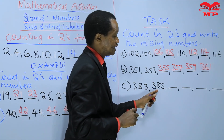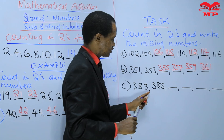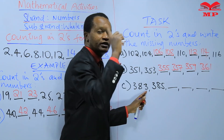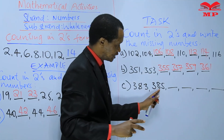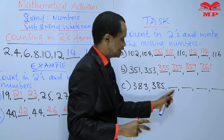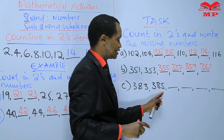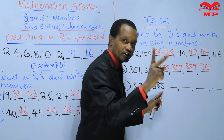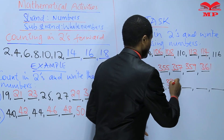Let's continue with C: 383 — the next number counting in twos: is it 385? Let's check: 383, 384, 385 — yes, 385 is correct. From 385 the next number is missing, so we count in twos: 385, 386, 387 — the next number is 387.